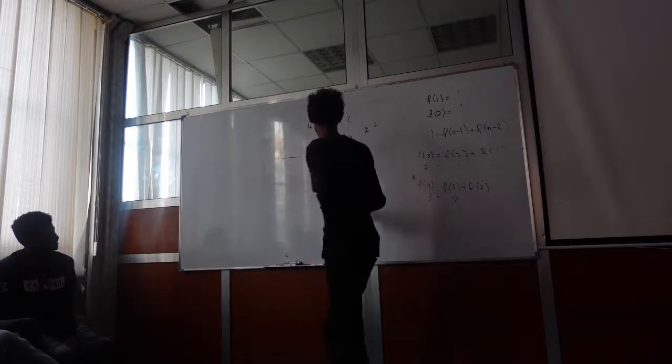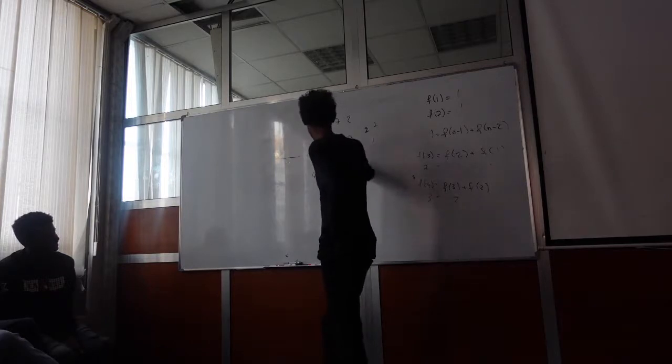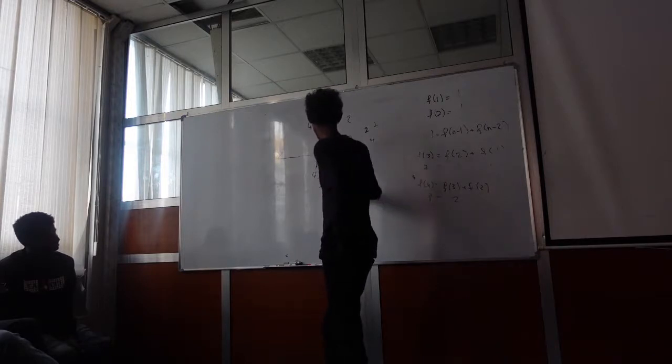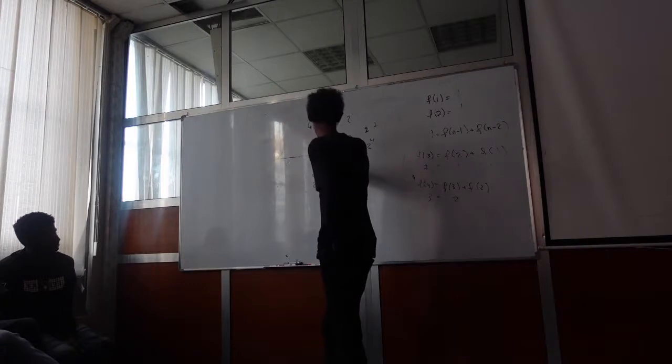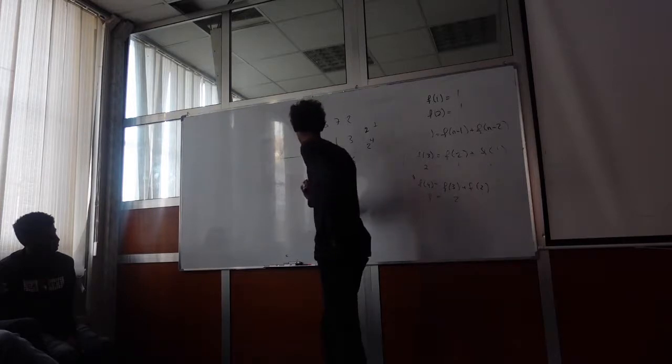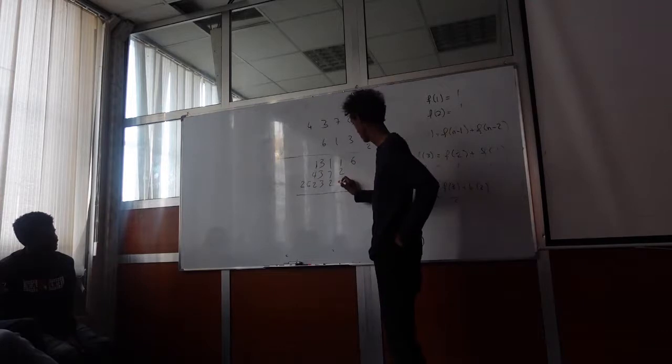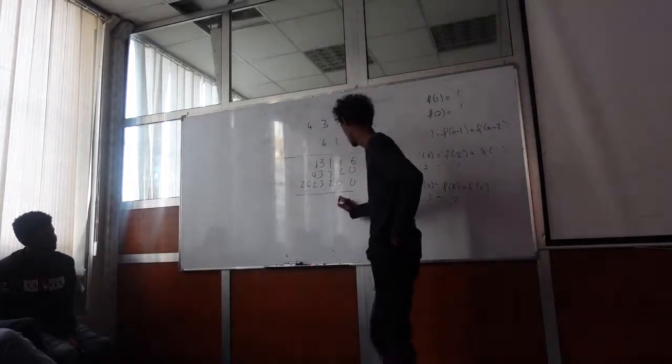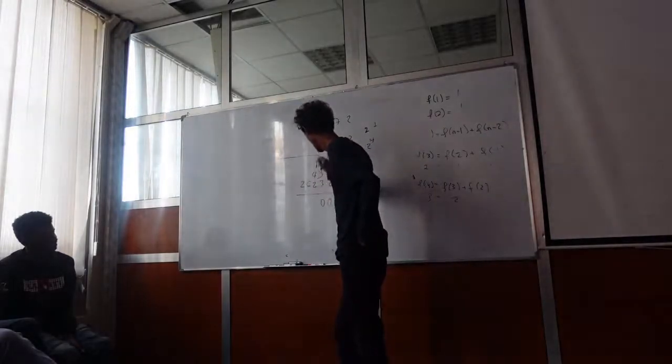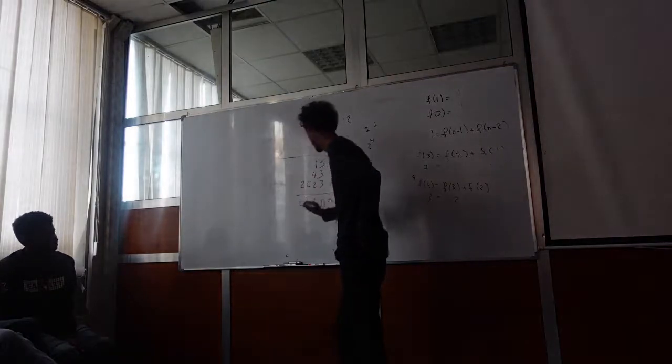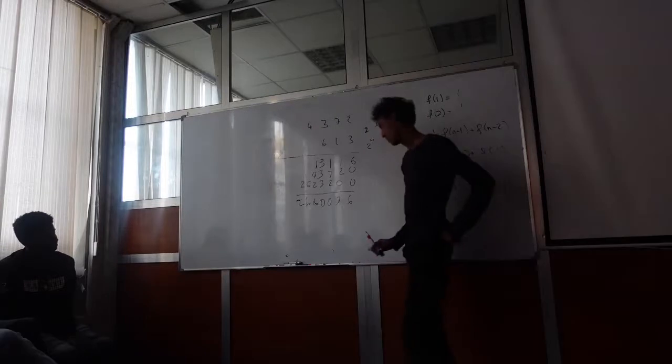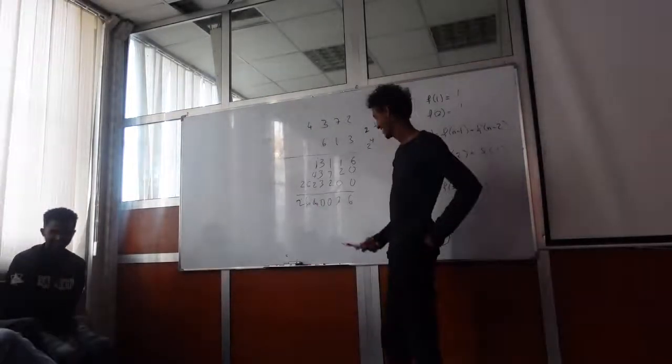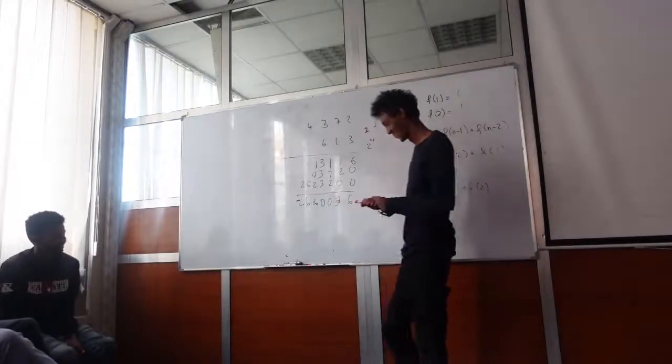Multiplying by 6: 6 by 2 is 12, carry 1. 6 by 7 is 42, so 3 carry 4. Multiplying 6 by 3 is 18 plus carry 4 is 22, carry 2. 6 by 4 is 24 plus carry 2 is 26. I'm just going to add these numbers. 6, 6, 3, 0, 0, 1, 6, and 8, and 6, and 20. This is 8. Okay, we believe you. Thank you very much.